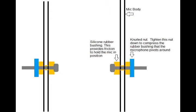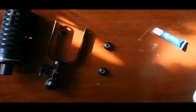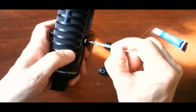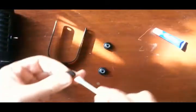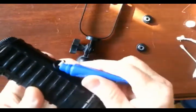Now I find that knurled nut will loosen up again as soon as you start moving the microphone around. So the trick is to clean the threads really well and put a little Loctite on there. Tighten the knurled nut down nice and tight and let the Loctite hold it in place.